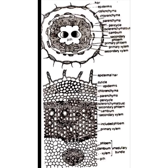The fourth tissue is the pericycle, which is represented by groups of sclerenchyma cells. As sclerenchyma cells are dead cells situated just outside the vascular tissue, they help in providing mechanical support.